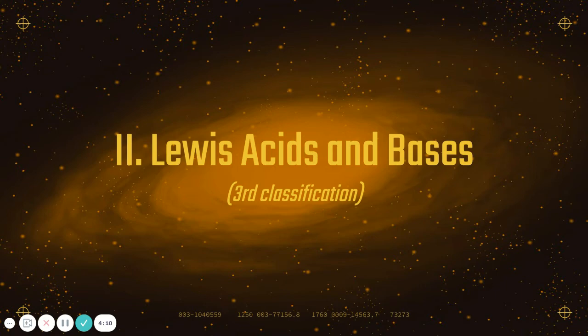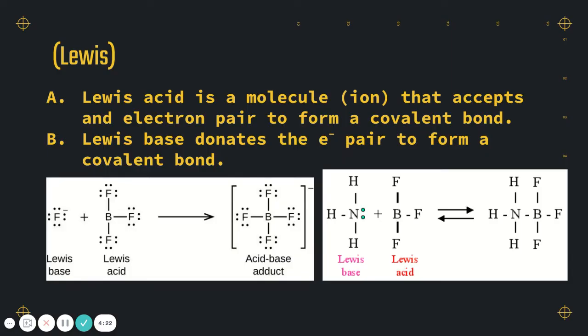The third classification is the Lewis acids and bases. We tend to stick with the Arrhenius and the Bronsted-Lowry definitions of acids, but this is the last one that you should know. Instead of having to do with hydrogens or hydroxides, this one actually has to do with electrons. So a Lewis acid accepts an electron pair and then a Lewis base donates an electron pair, always forming a covalent bond.